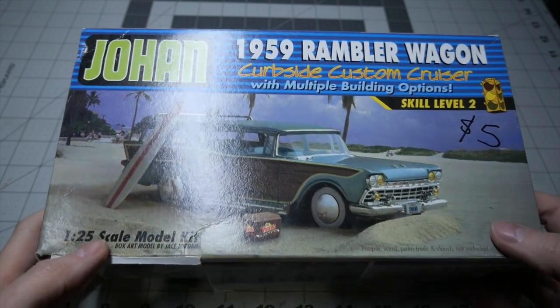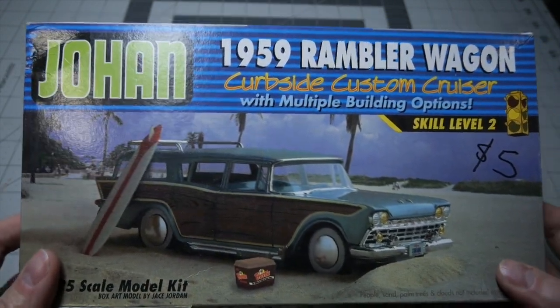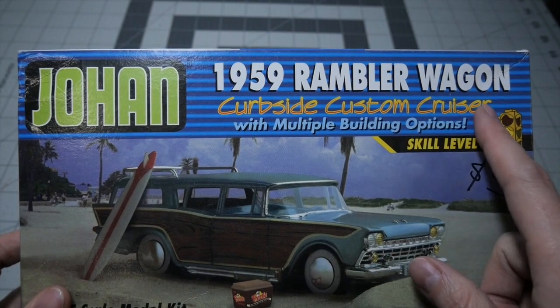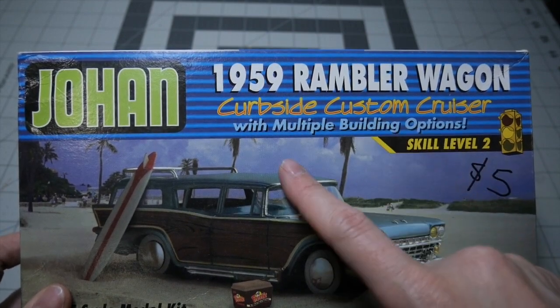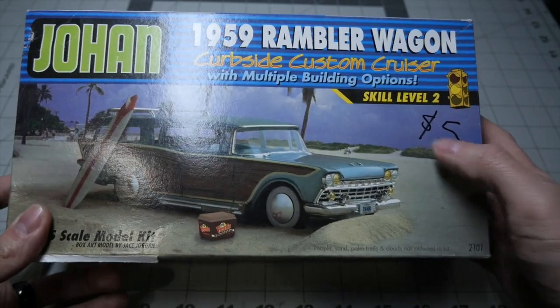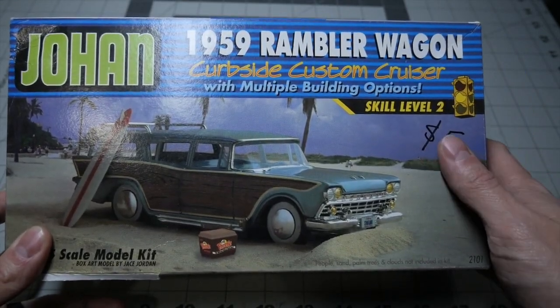This is the Johan 1959 Rambler Wagon Curbside Custom Cruiser that I got in the collection, with multiple building options, skill level two. There's a marking of five bucks on here.